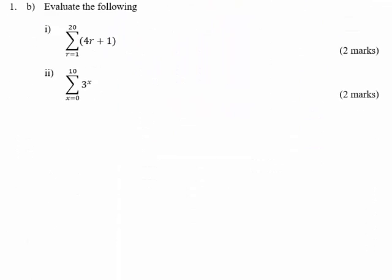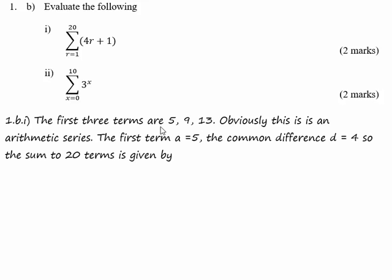Part B. Evaluate the following. We've got the sum from r equals 1 to 20 of 4r plus 1. The way to solve something like this is to start by looking at the first three terms. The first three terms are 5, 9, and 13. So there's a difference of 4 between each one. This is obviously an arithmetic series. The first term is 5 and the common difference is 4.